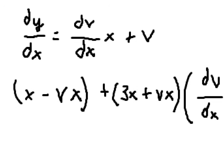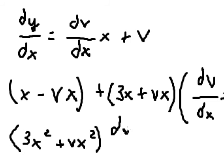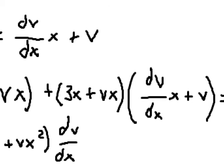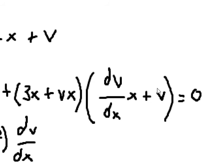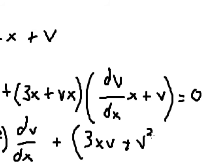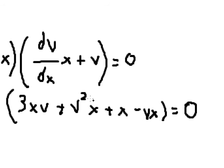Next we need to simplify. We expand to get 3x squared plus vx squared times dv over dx, and factoring out terms we get 3xv plus v squared x times x plus x times v times x. So we get 3xv minus vx, which gives us 2v, and continuing to simplify we combine like terms.